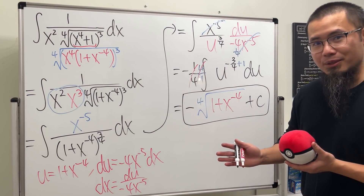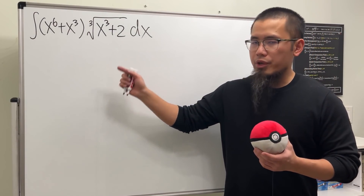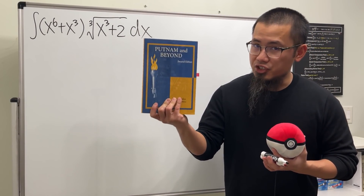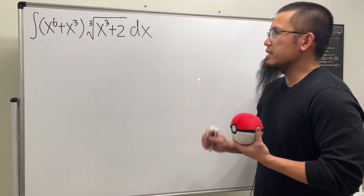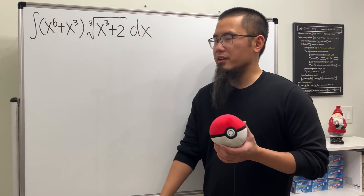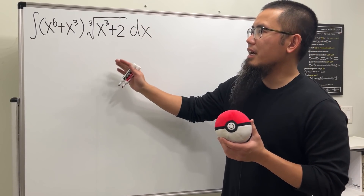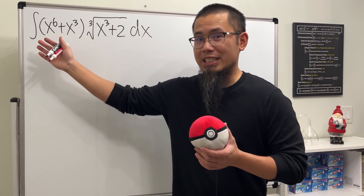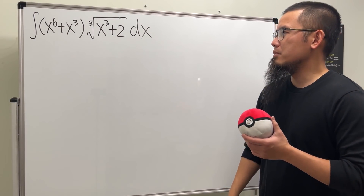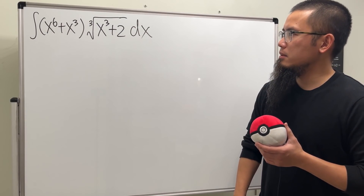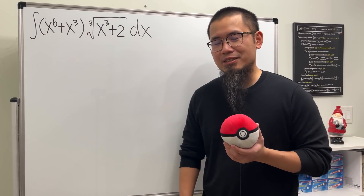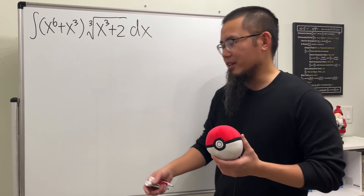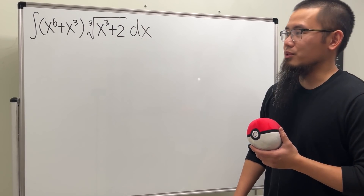This is almost like a brain teaser, but really fun. And no, I have another one! For the second integral, I got this from the book called 'Putnam and Beyond' — if you like challenging math questions, definitely check it out. Should we factor out x to the third power from the inside? No, because if you do that, we don't get negative exponents — moving it to the bottom won't help either.